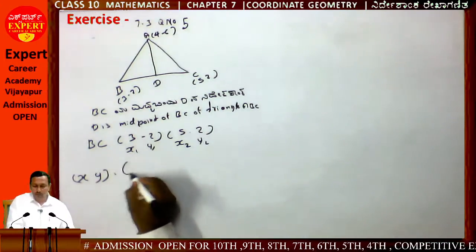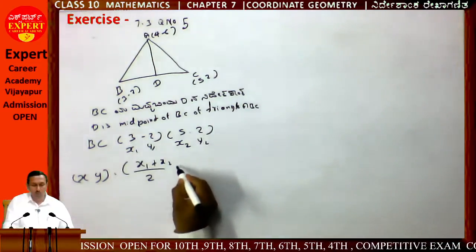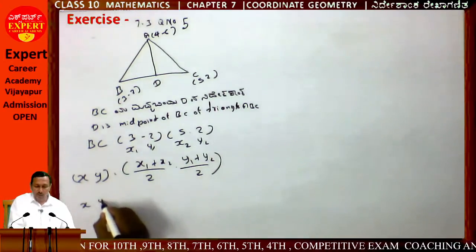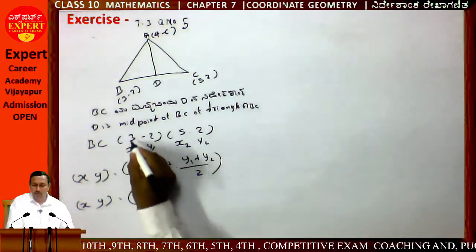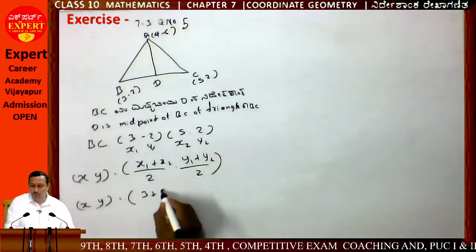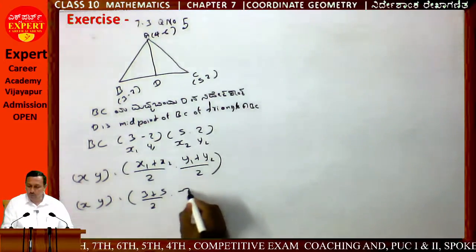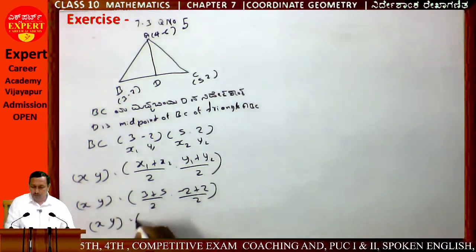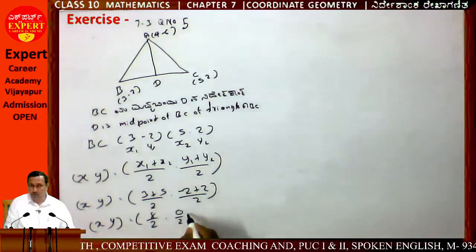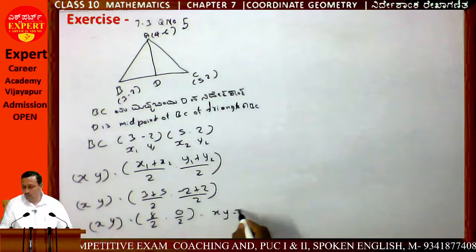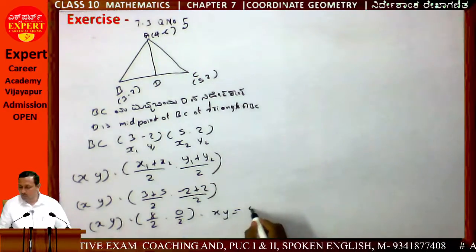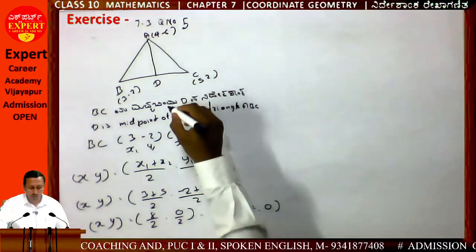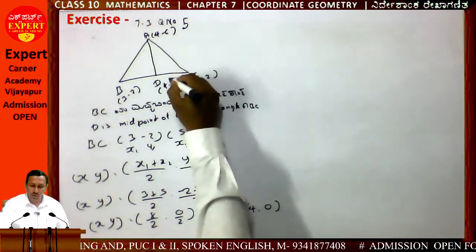Using the midpoint formula: x = (x1 + x2)/2, y = (y1 + y2)/2. So x = (3 + 5)/2 = 8/2 = 4, and y = (-2 + 2)/2 = 0/2 = 0. Therefore D = (4, 0).